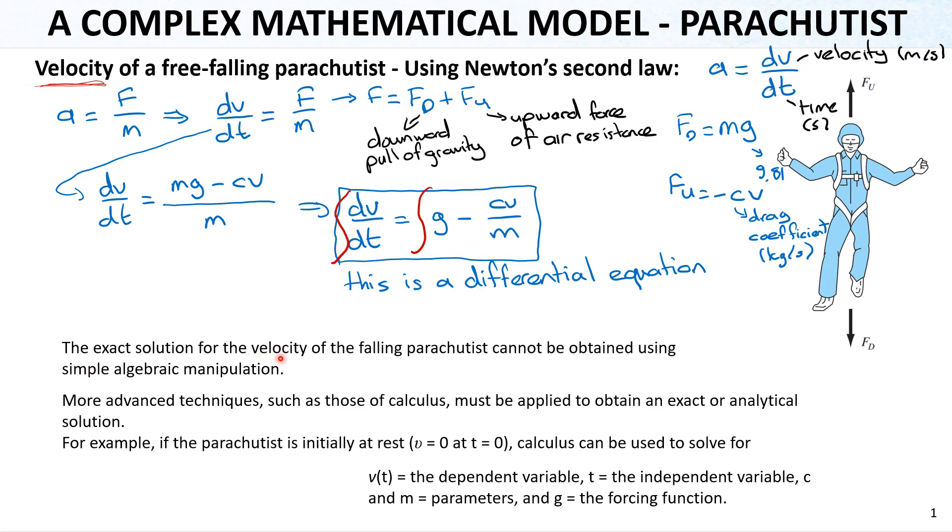However, the exact solution for the velocity of the falling parachutist cannot be obtained by using simple algebraic manipulation. What it means is that we need a complicated integration process, and maybe we don't know how to integrate this, or it may be difficult to integrate. That's why it is a little bit complex to solve this mathematical problem. More advanced techniques, such as the integration, should be applied to obtain the exact or analytical solution. I will not show the steps how to integrate them but give the result only. You will see from the integrated result that it's really complicated to be able to get that.